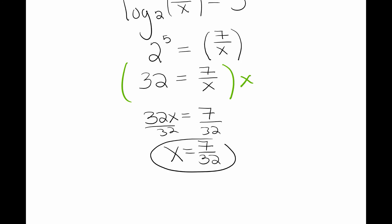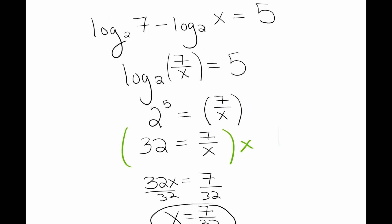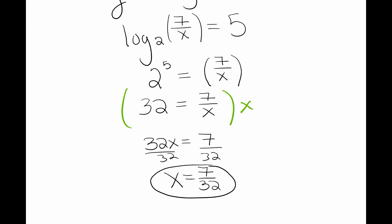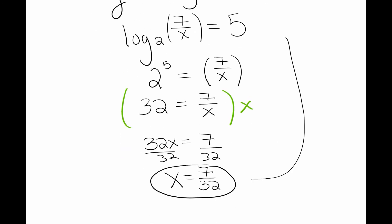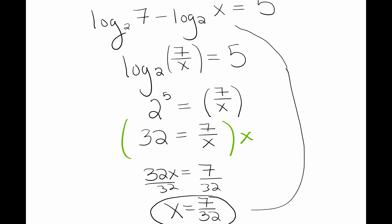Again, you want to check the original to make sure you're not taking the log of a negative. So go back up to the top and put 7/32 into your equation. If I put 7/32 into the original equation, let's see, I have log base 2 of 7 minus log base 2 of 7/32. That's all good because you're not taking the log of a negative.